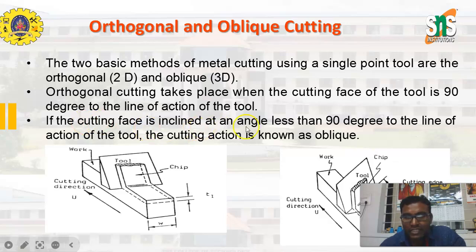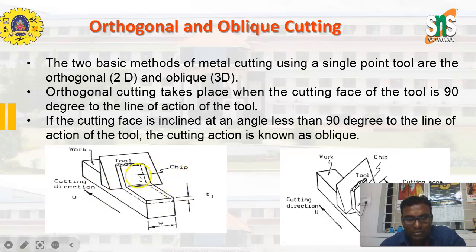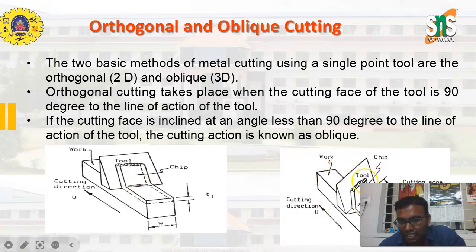If the cutting face is inclined at an angle less than 90 degrees to the line of action of the tool, then this type of cutting action is known as oblique cutting. Looking at the diagram, the chip and the workpiece are shown with the tool perpendicular to the line of action — that is orthogonal cutting. In the second diagram, the tool is inclined at a certain angle to the workpiece, and this type of cutting is known as oblique cutting.